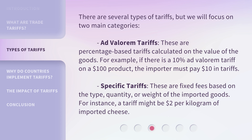Specific tariffs: these are fixed fees based on the type, quantity, or weight of the imported goods. For instance, a tariff might be $2 per kilogram of imported cheese.